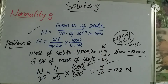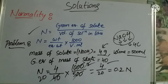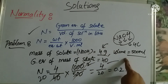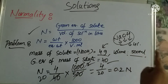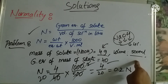Here we have the question again: 4 grams of NaOH is dissolved in 500 mL of its aqueous solution. Find the normality of the solution. We have 4 grams of NaOH, 500 mL of aqueous solution. We need to find the normality, so we assign the formula and identify that 4 grams is the solute.